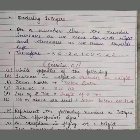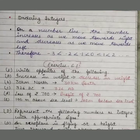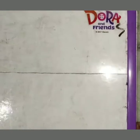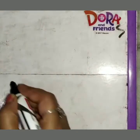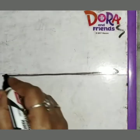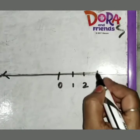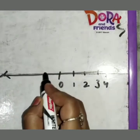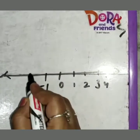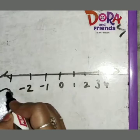Now, ordering integers means ordering on a number line. On a number line, the number increases as we move toward the right. This is a number line: 0, 1, 2, 3, 4 on the right, and minus 1, minus 2, minus 3 on the left.